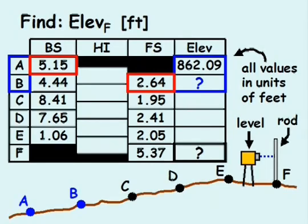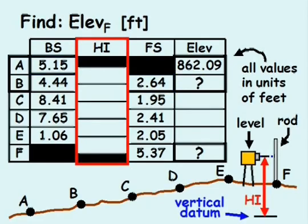The column labeled HI represents the height of the instrument, or more precisely, the elevation of the line of sight based on a vertical datum or benchmark. Before we can find the elevation at point F, we first have to find the elevation at point B, and then we'll work our way down to point F, one point at a time.